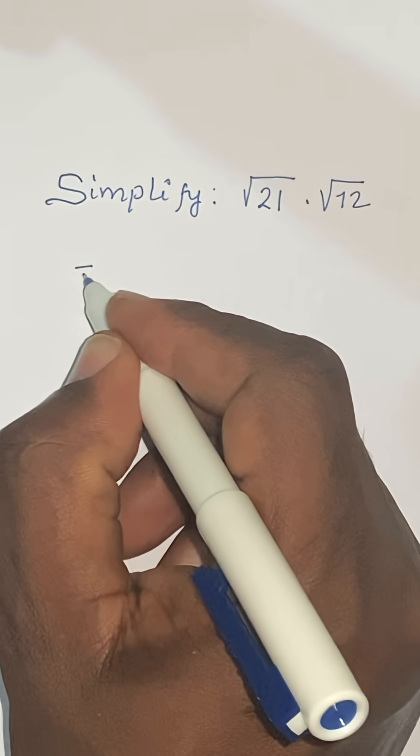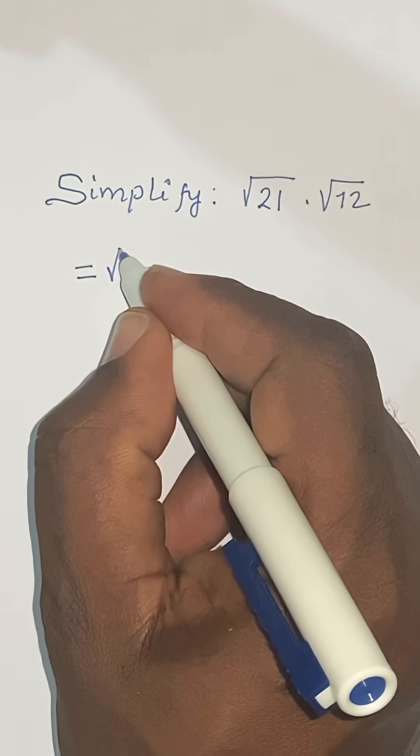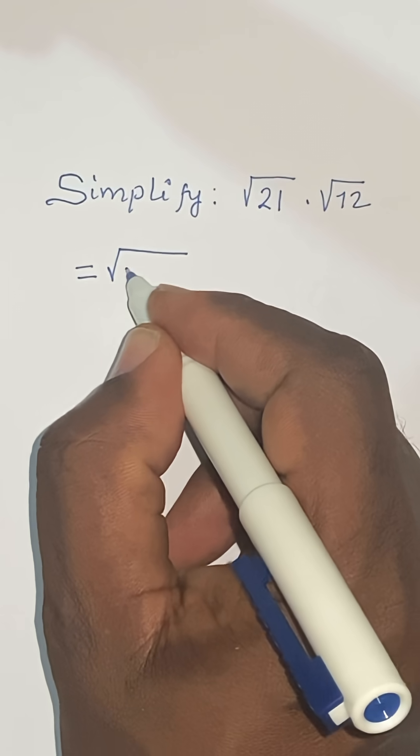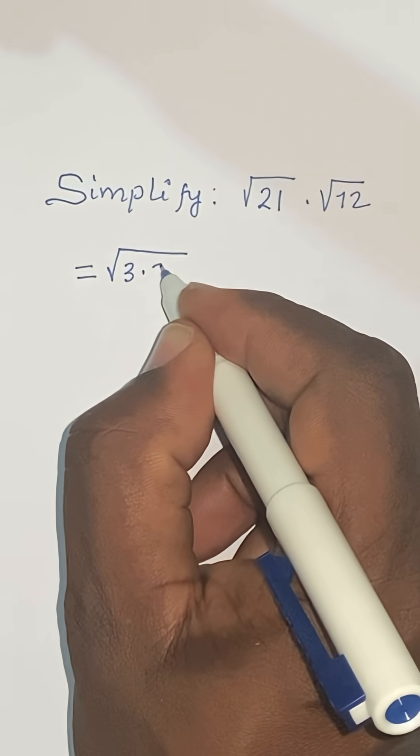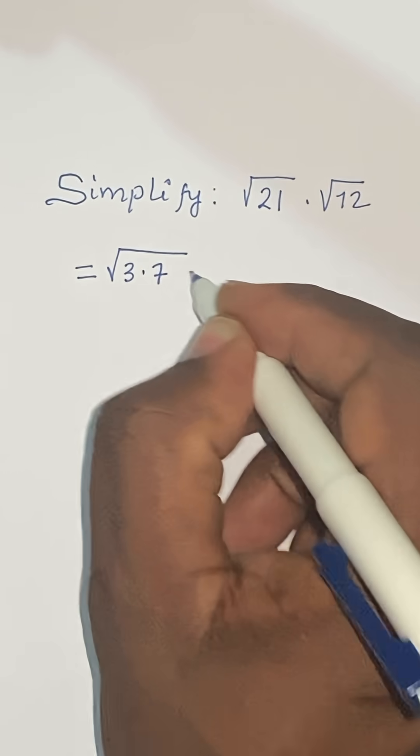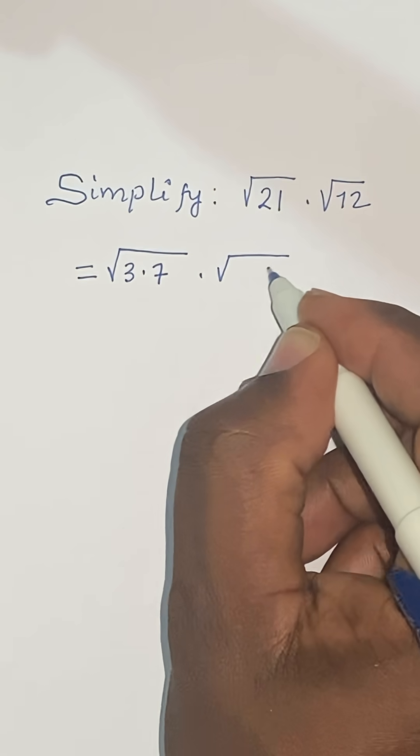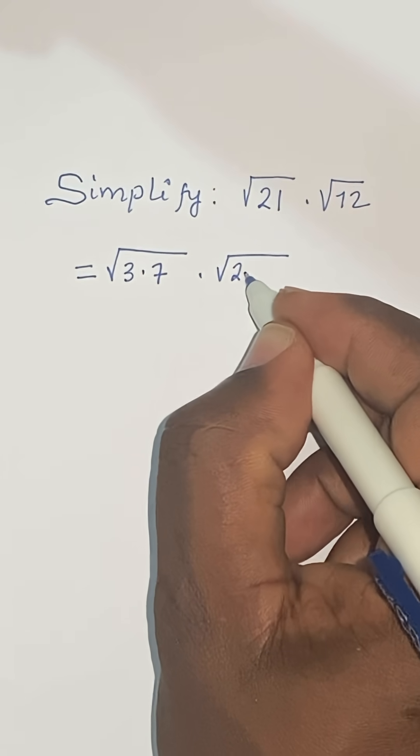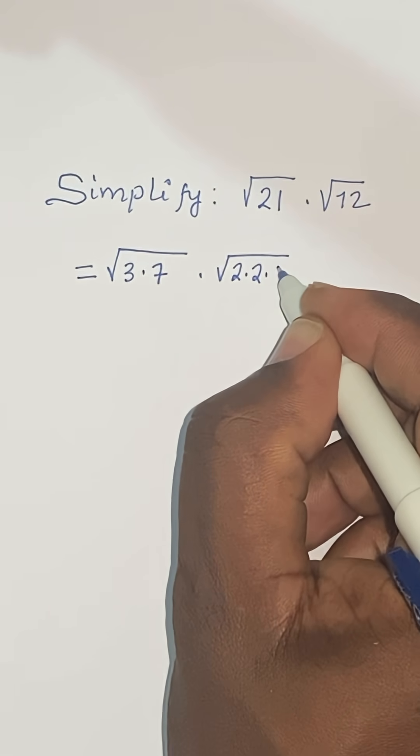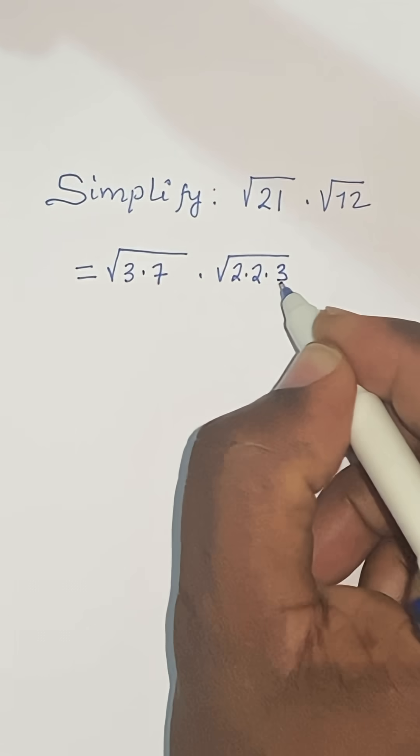So we are going to write this as equal to the square root of 3 times 7. These are the prime factors of 21 times the square root of 2 times 2 times 3. These are the prime factors of 12.